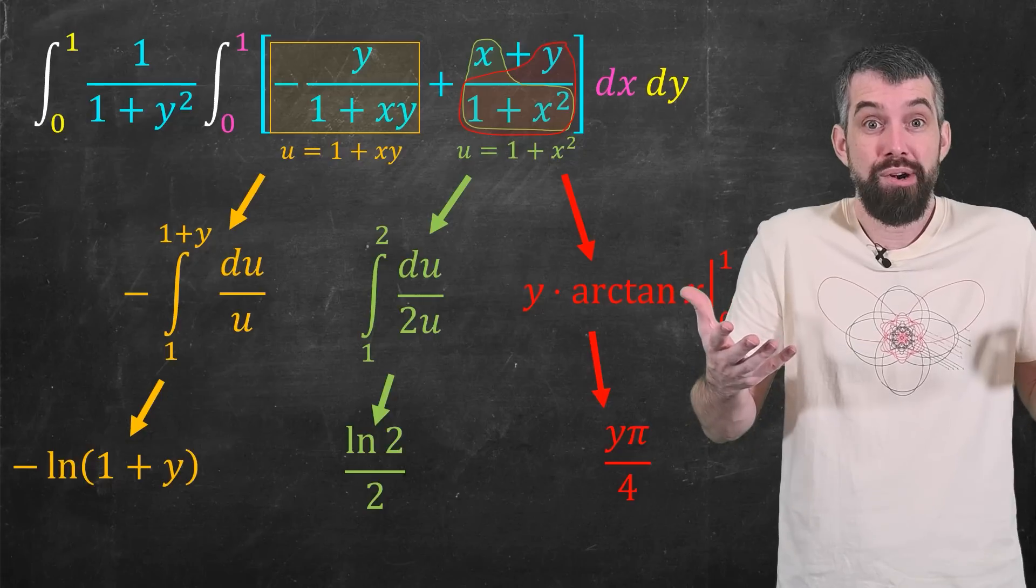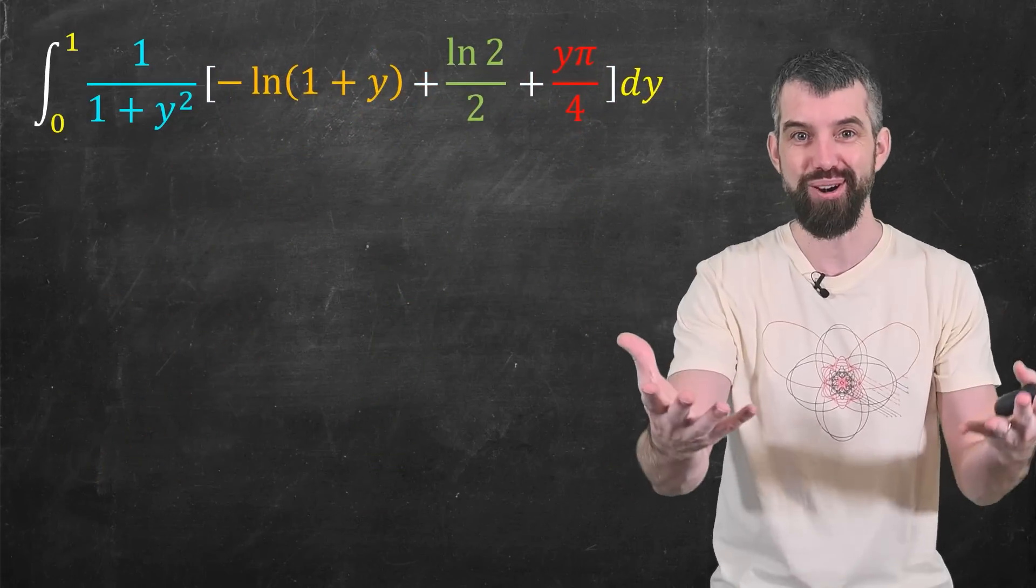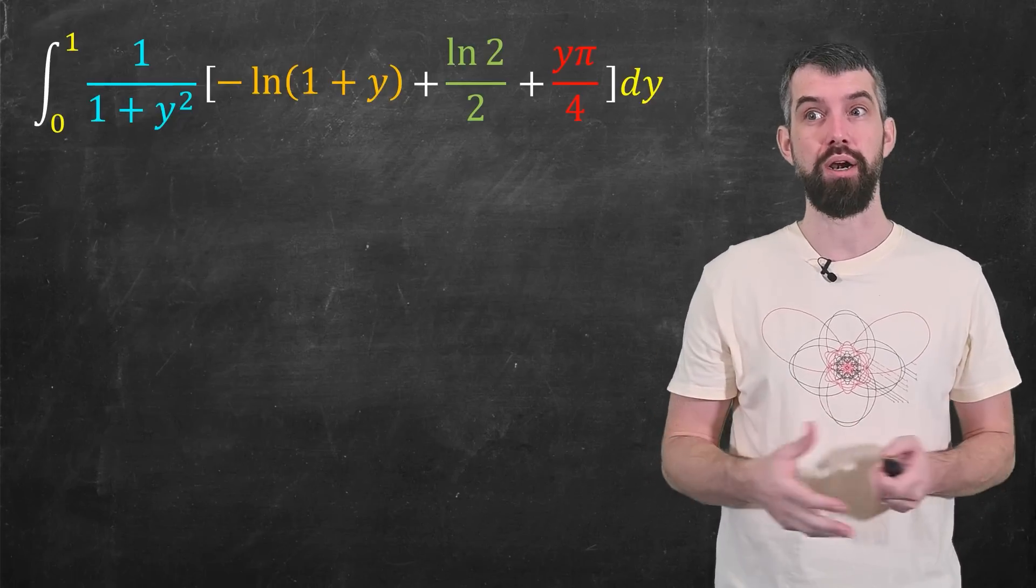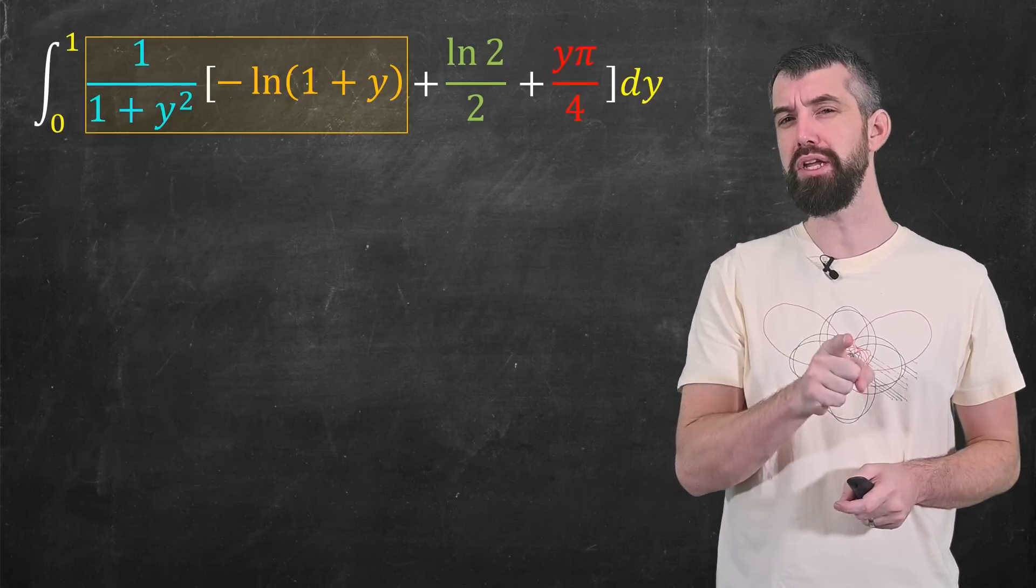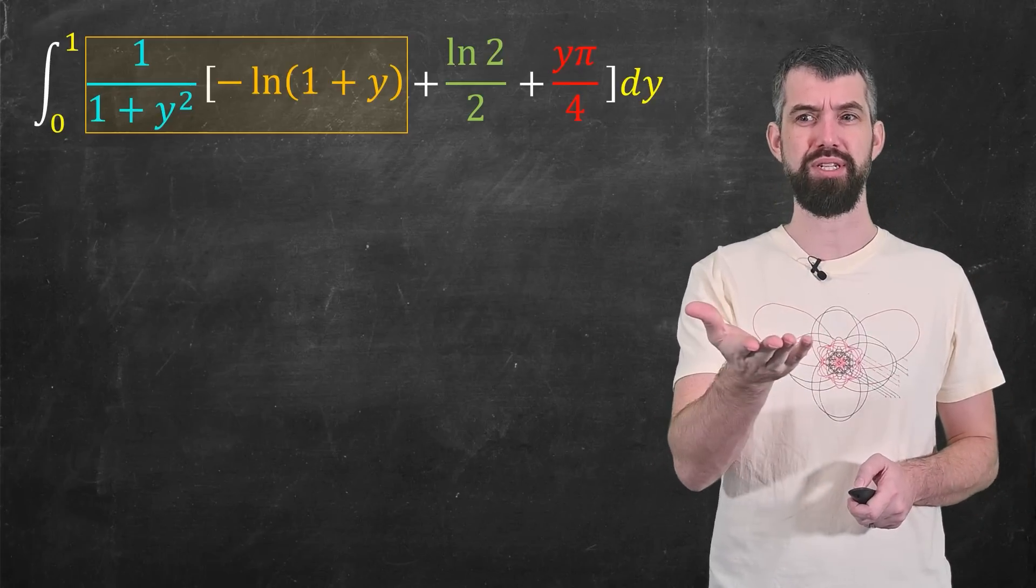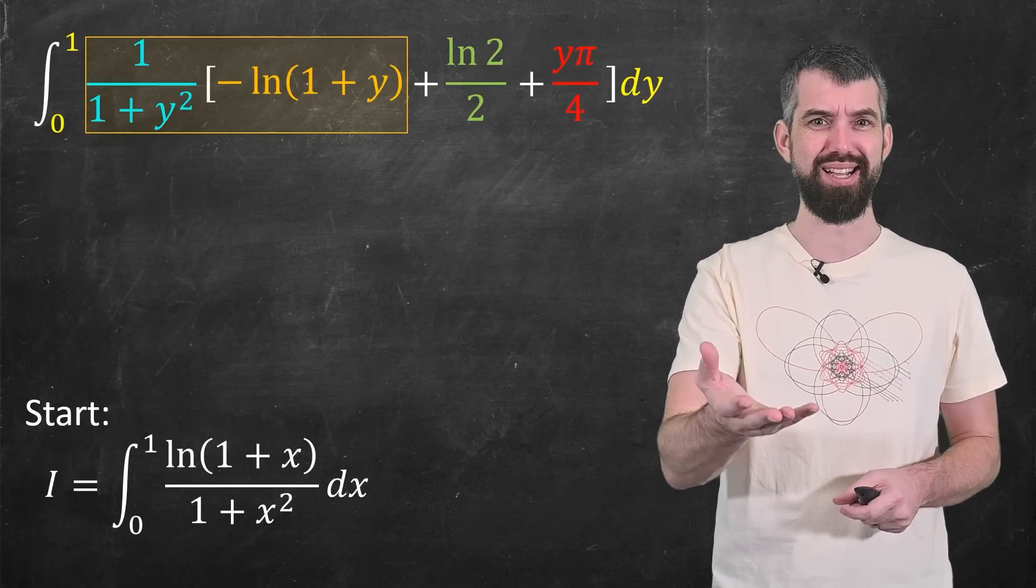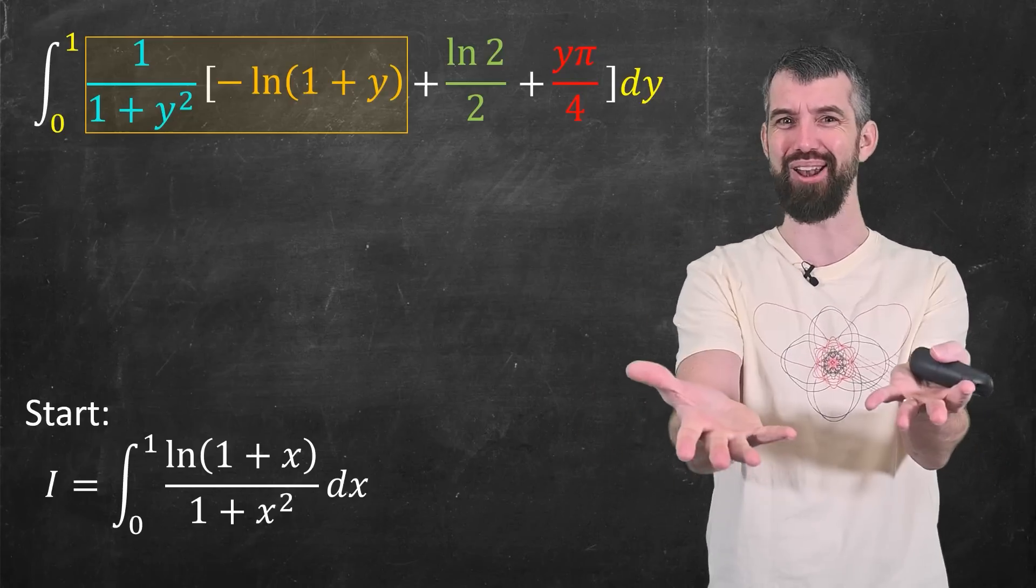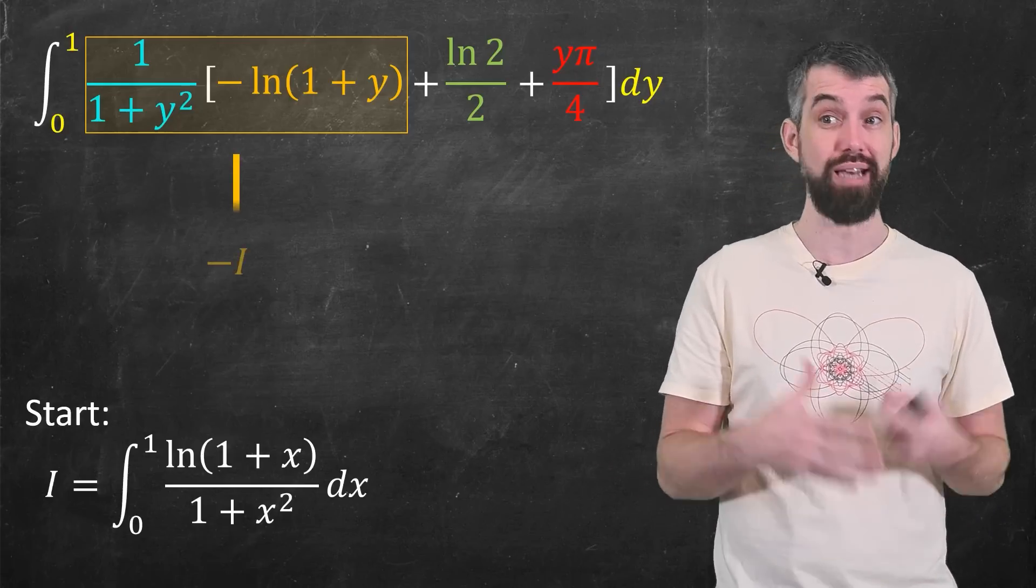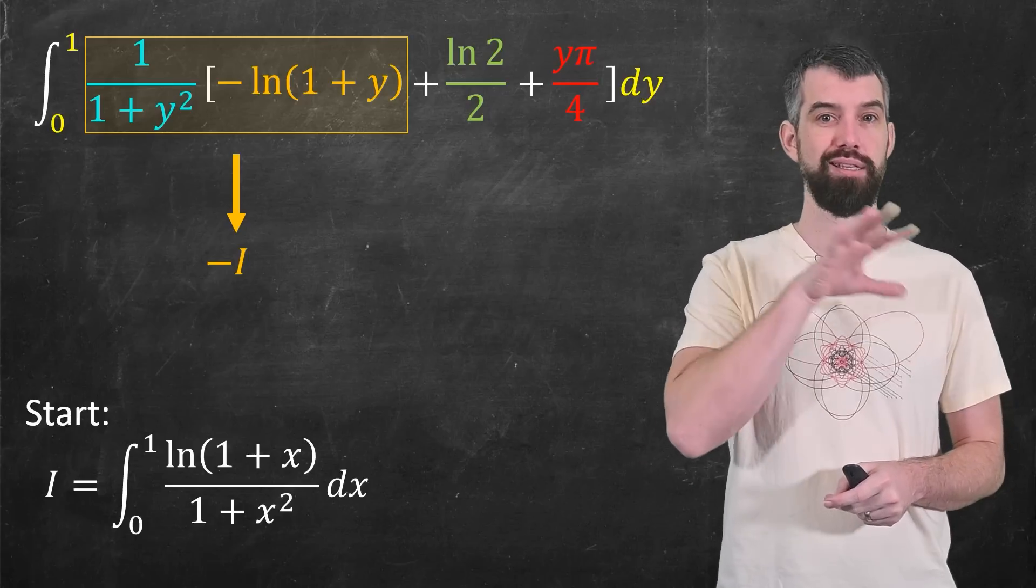So I've done the inner integral. Plug all those three things in, and now I have this expression. Now I have to do the outer integral. Is that going to be easier? Well, turns out, yes. Again, three terms here. First term, does this look familiar to you? I mean, there's y's everywhere here, but remember how we started? It was logarithm of 1 plus x over 1 plus x squared. It's the same thing, it's just colored y as opposed to colored x now. The choice of symbol is different, but the evaluation of the integral is going to be the same thing. So this is just negative i because there's that negative term. Whatever the initial integral is, it's just the negative of it.